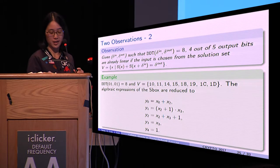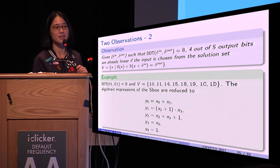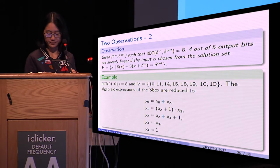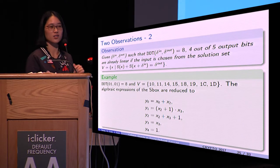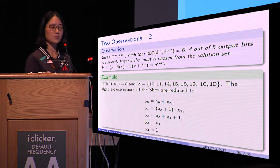If the input is chosen from the solution set, then the algebraic expression of the S-box is reduced to this. As can be seen, Y_1 is the only nonlinear bit. If Y_1 is not involved in the equation system EY, then two equations are enough for the linearization.